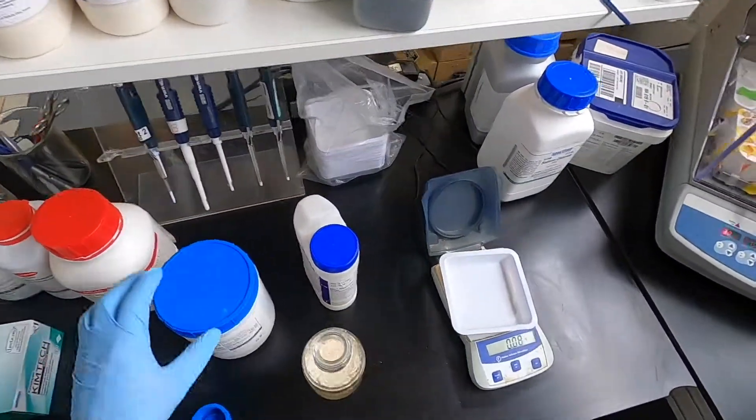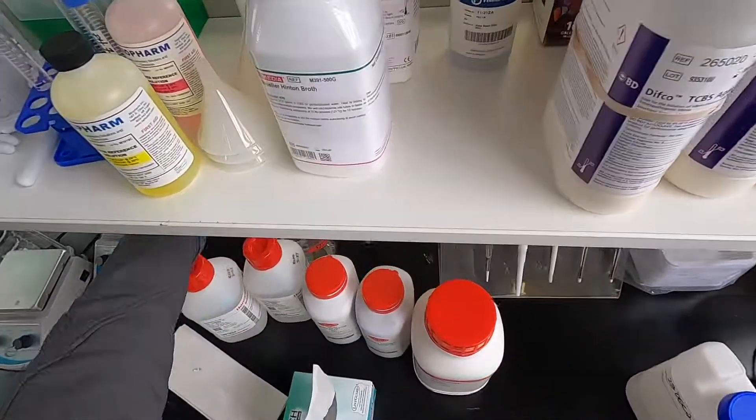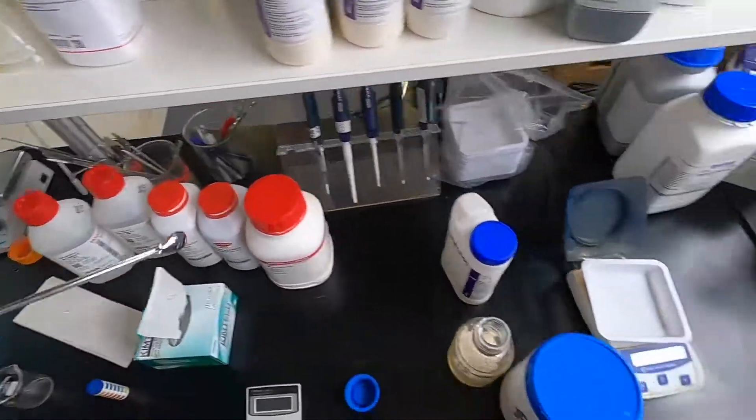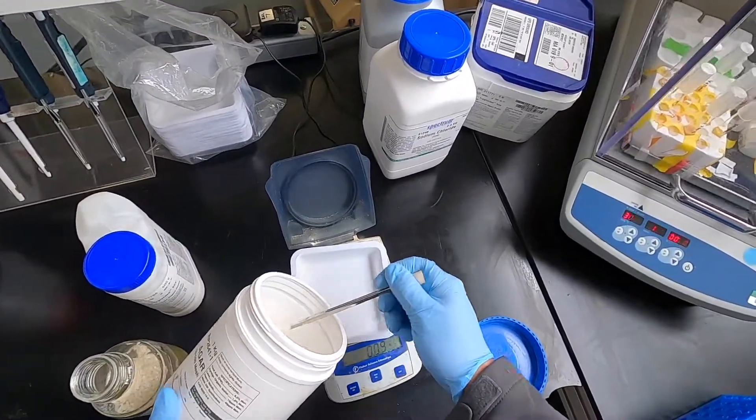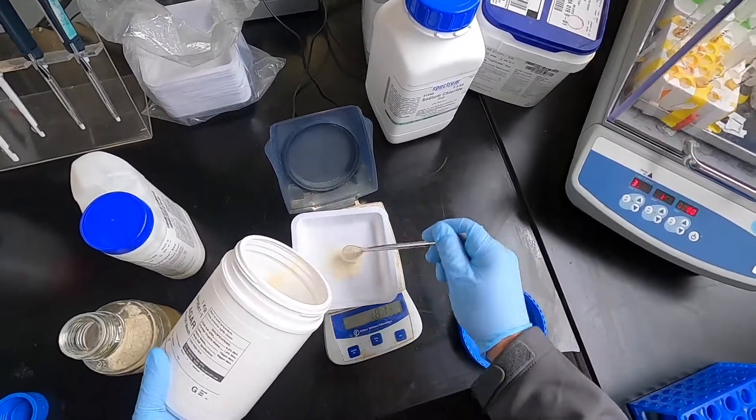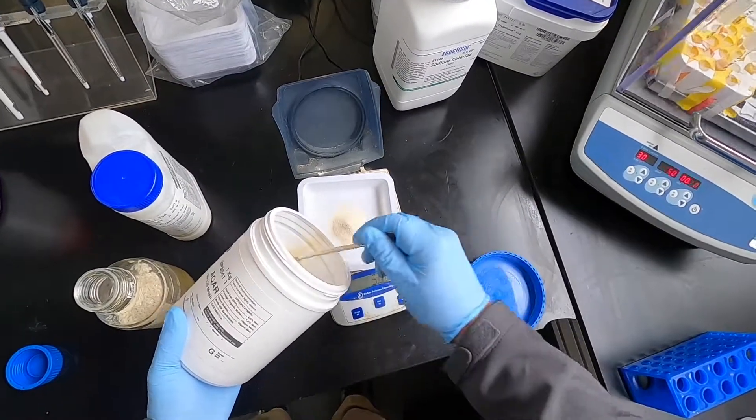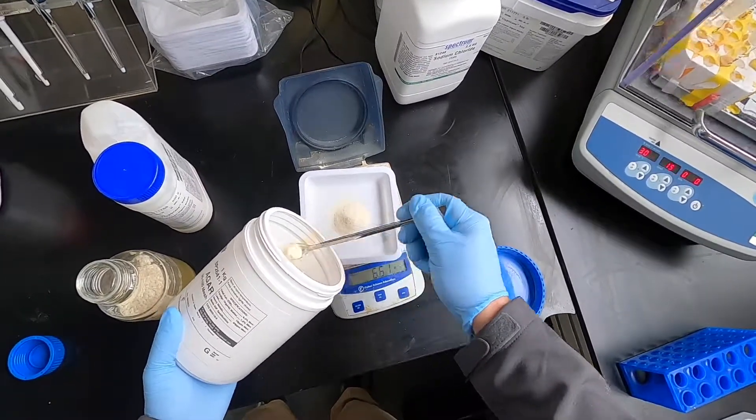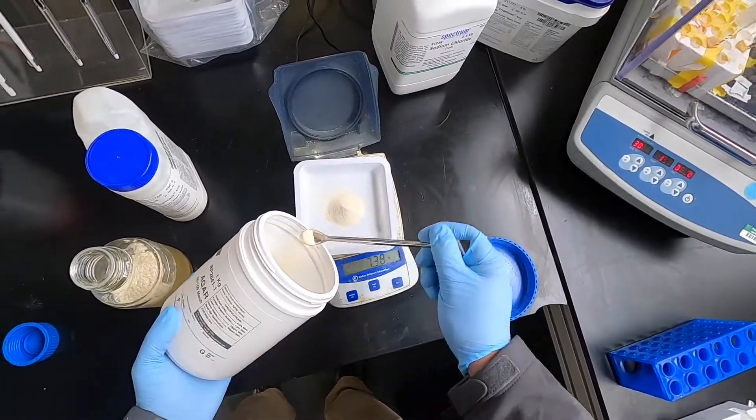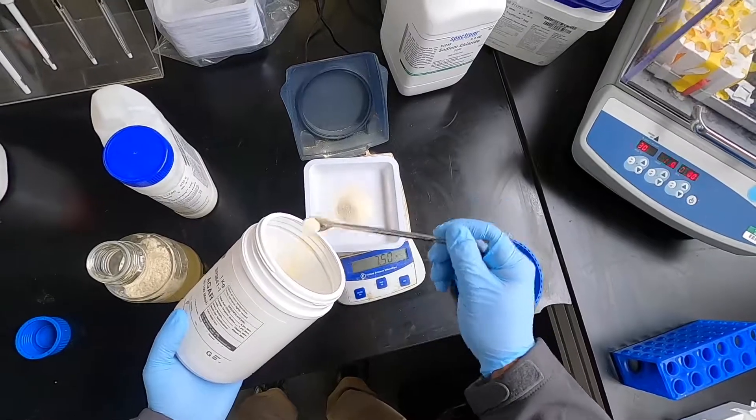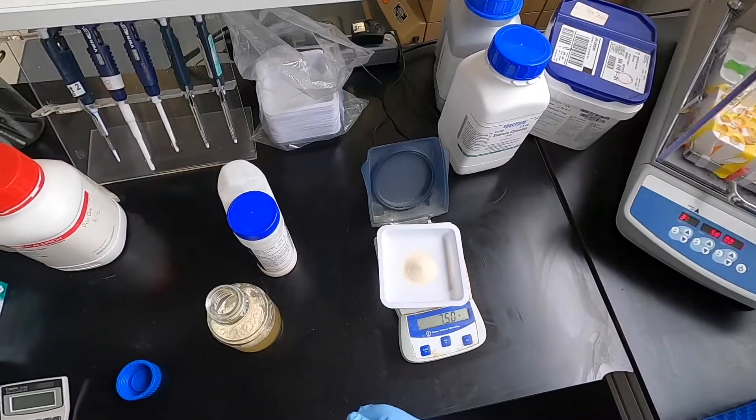For agar, it's 1.5 percent in normal agar, which is 15 grams per liter, so we use seven and a half grams for half a liter. Right on the dot, baby. Professional.